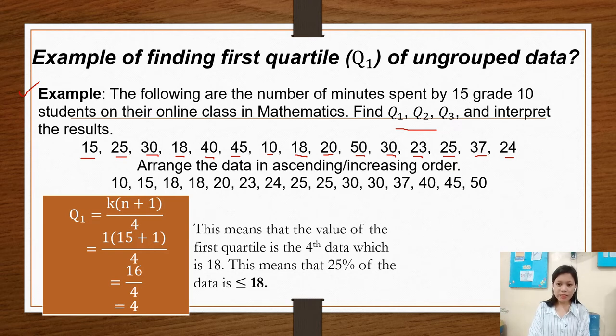So we have to arrange the data in ascending or increasing order, or from lowest data to highest data. So we have 10, 15, 18, 18, 20, 23, 24, 25, 25, 30, 30, 37, 40, 45, and 50. So it is in ascending or increasing order.